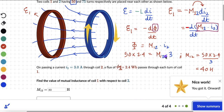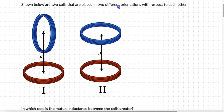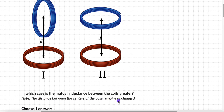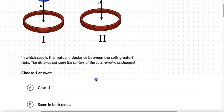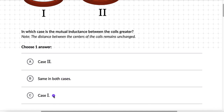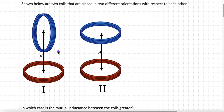There are different types of questions you can try — the link to the exercise is in the description. We now move on to a different question. We have two coils placed in two different orientations with respect to each other: case 1 and case 2. In which case is the mutual inductance between the coils greater? Note that the distance between the centers of the coils remains unchanged.